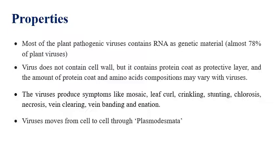Most plant pathogenic viruses contain RNA as genetic material. The virus does not contain a true cell wall, but has a protein coat which acts as a protective layer for the nucleic acid — the main infectious material. The two major components are nucleic acid and protein coat. The nucleic acid is the infectious material; the protein coat only protects it and plays no role in disease spread or transmission.